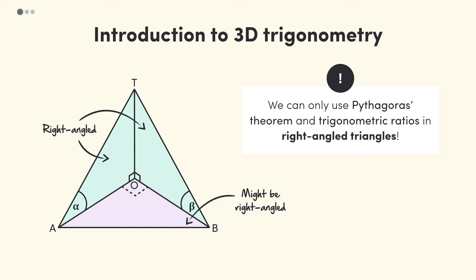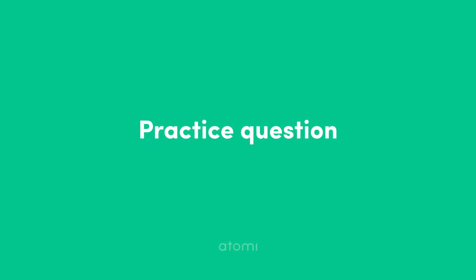So those are the main features of 3D Trigonometry. Essentially, we'll be using the information given in one or two of the triangles to help find unknown information in other triangles. With that, let's use a similar diagram in a practice question.